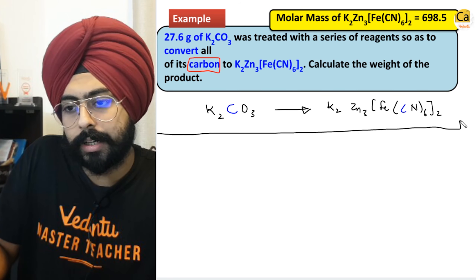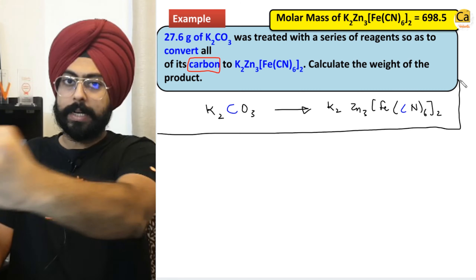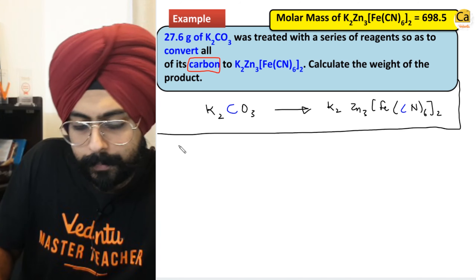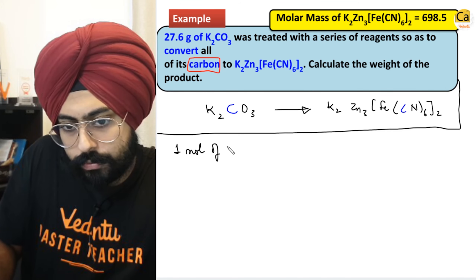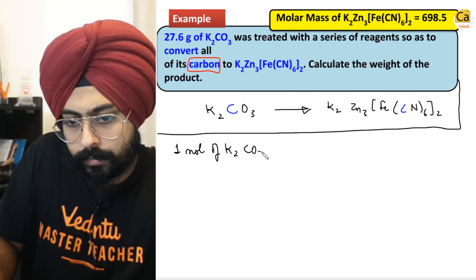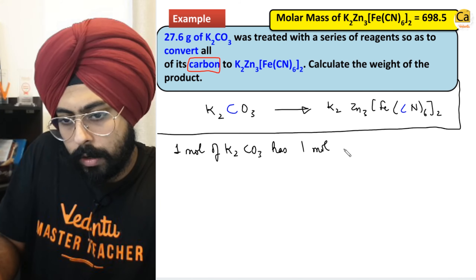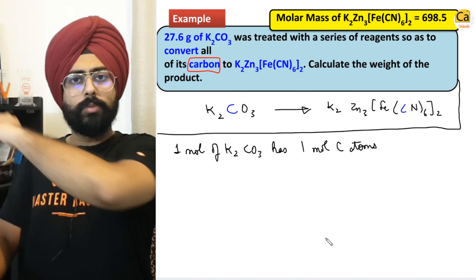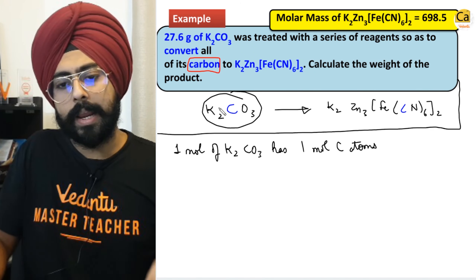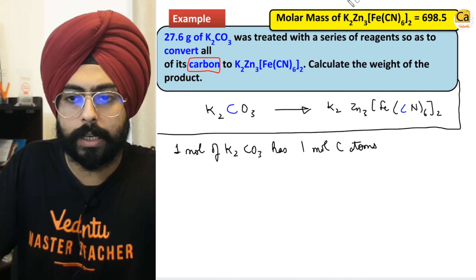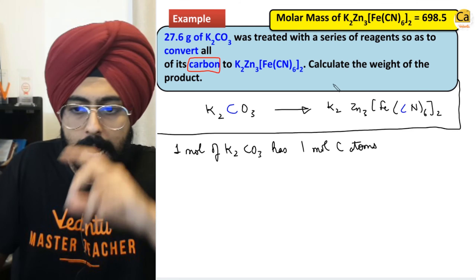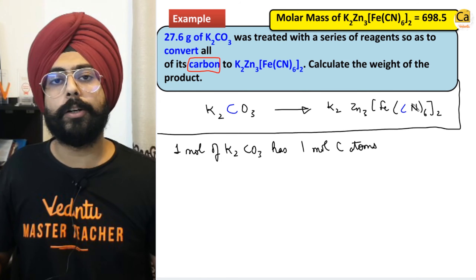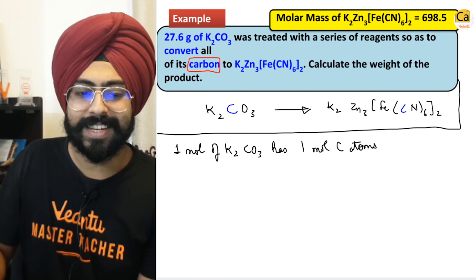We have to think about the ratios. One mole of K2CO3 has one mole of carbon atoms. My question is: how much K2Zn3[Fe(CN)6]2 can one mole of carbon create? Let's think about it on a separate page.